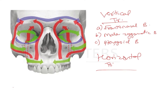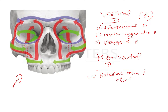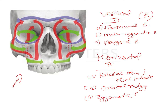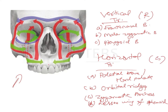In this image, the vertical trajectories are represented by the red lines, and the horizontal trajectories are represented by the green lines. The horizontal trajectories include the palatal bones such as the hard palate, the orbital ridges, the zygomatic arches, and the lesser wing of sphenoid.